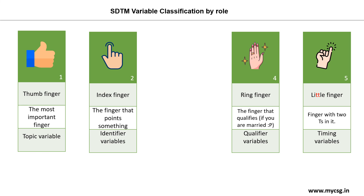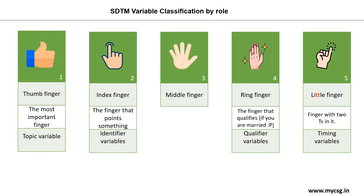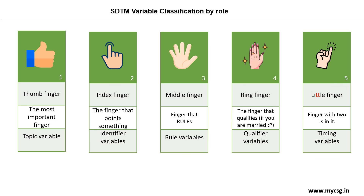And the last one in the list is the middle finger. Try to associate the tag 'the finger that rolls' to the middle finger. This way you can quickly recollect the rule variables.